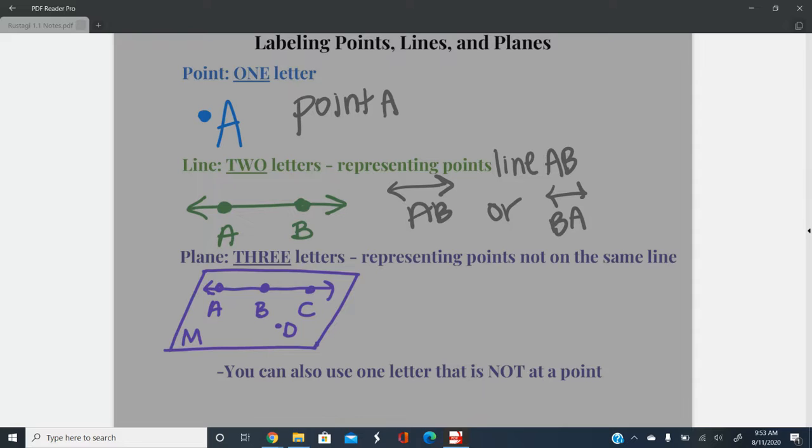Finally, to label a plane, you're going to use three letters. And those three letters have to represent points that are not on the same line. So if I'm looking at this, I can write out the word plane, and then I'm just going to pick the three letters that aren't on the same line. It could be any three. So I'm going to choose A, B, D.